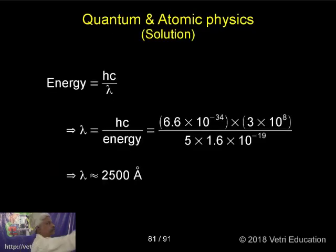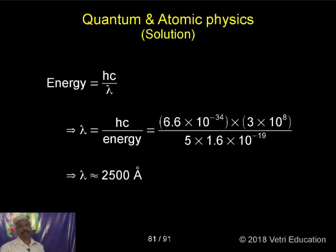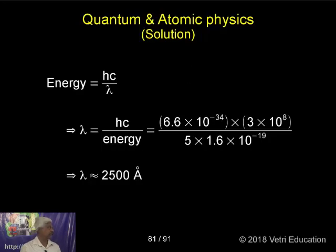Simply substitute the values. You have to remember the value of h (Planck's constant) and c (speed of light) — these are supposed to be known, so keep them in mind.